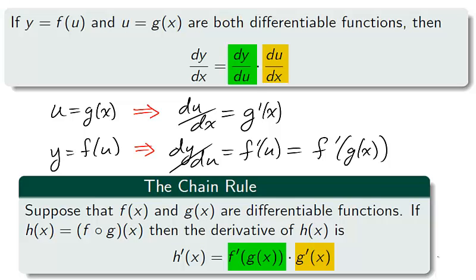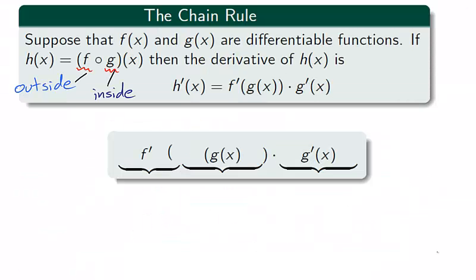We make the replacement of dy over du and du over dx to obtain the chain rule. The chain rule describes how to take the derivative from the composition of f and g. We will call f the outside function and g the inside function.